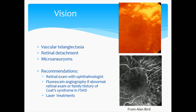Vision is more likely to be affected in those who have severe FSHD. This includes vascular telangiectasias — that's abnormal blood vessel growth — which can lead to retinal detachment and microaneurysms. We recommend a retinal examination with an ophthalmologist every two years, and fluorescein angiography if there's an abnormal retinal examination or a family history of Coats disease or Coats syndrome in FSHD. Coats syndrome is just the name for these vascular telangiectasias, and it is treatable with laser treatments.